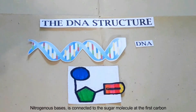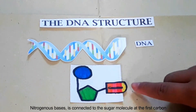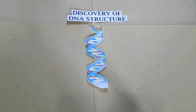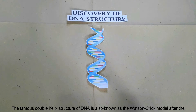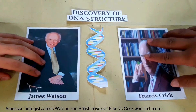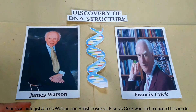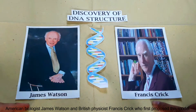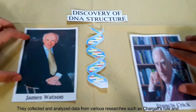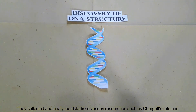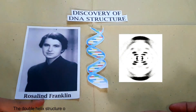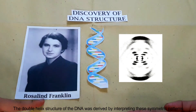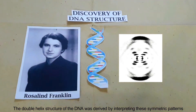The nitrogenous base is connected to the sugar molecule at the first carbon. The famous double helix structure of DNA is also known as the Watson-Crick model, after American biologist James Watson and British physicist Francis Crick, who first proposed this model. They collected and analyzed data from various researches such as Chargaff's rule and Rosalind Franklin's X-ray crystallography. The double helix structure of DNA was derived by interpreting these symmetric patterns.